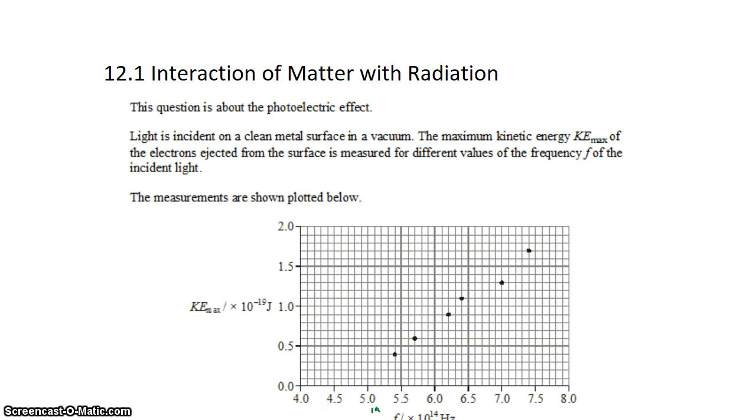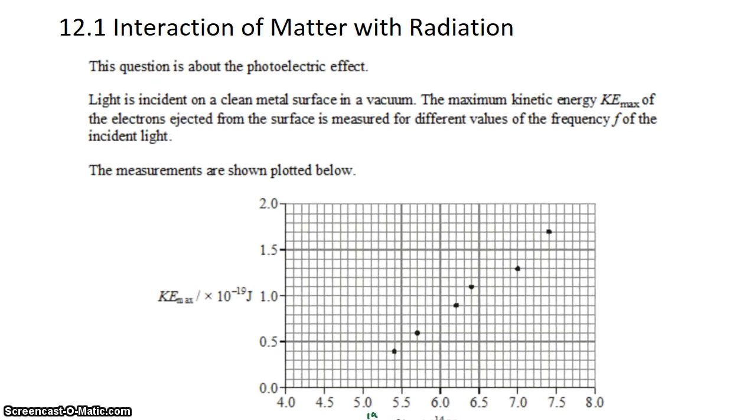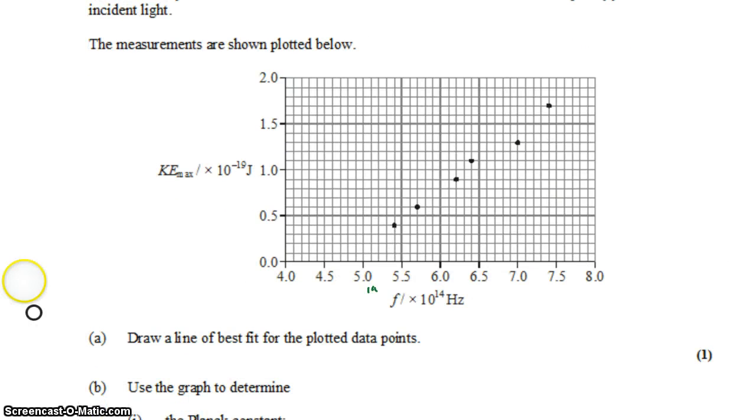David Kahn here with another question from the IB Question Bank on topic 12.1. We're looking at the photoelectric effect. We have light incident on a clean metal surface in a vacuum, and we're measuring the maximum kinetic energy of the electrons ejected from the surface for different frequencies of incident light. The graph shows kinetic energy on the y-axis and frequency of the light on the x-axis.